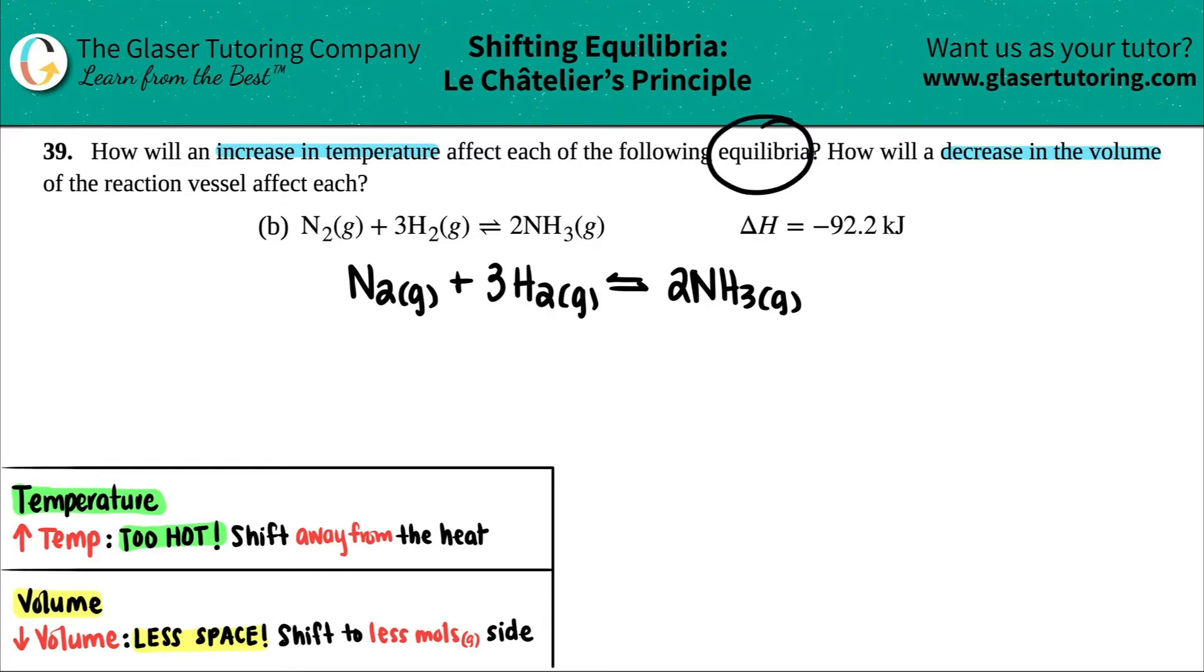Now with Le Chatelier's principle, they're talking about equilibrium, and then they're changing things that they can change, like temperature, pressure, volume, and concentration. Since we're increasing the temperature, decreasing the volume, and we're seeing what's happening with equilibrium, that's Le Chatelier's principle in a nutshell.